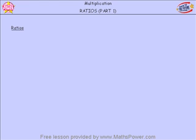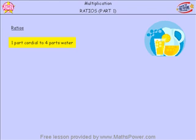Hi, today we're looking at ratios. When we make cordial, we make one part cordial to four parts water.